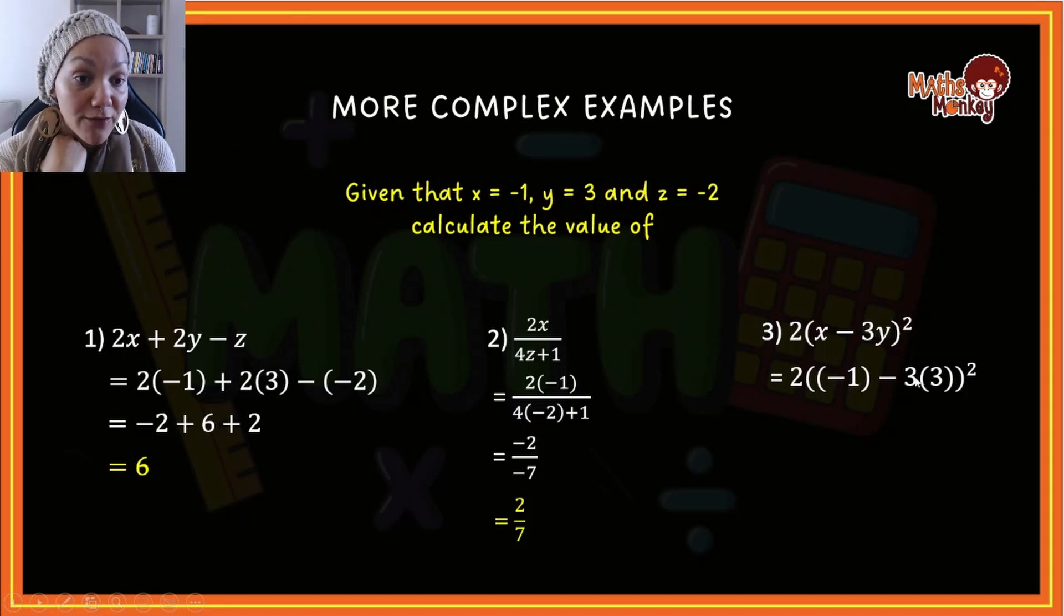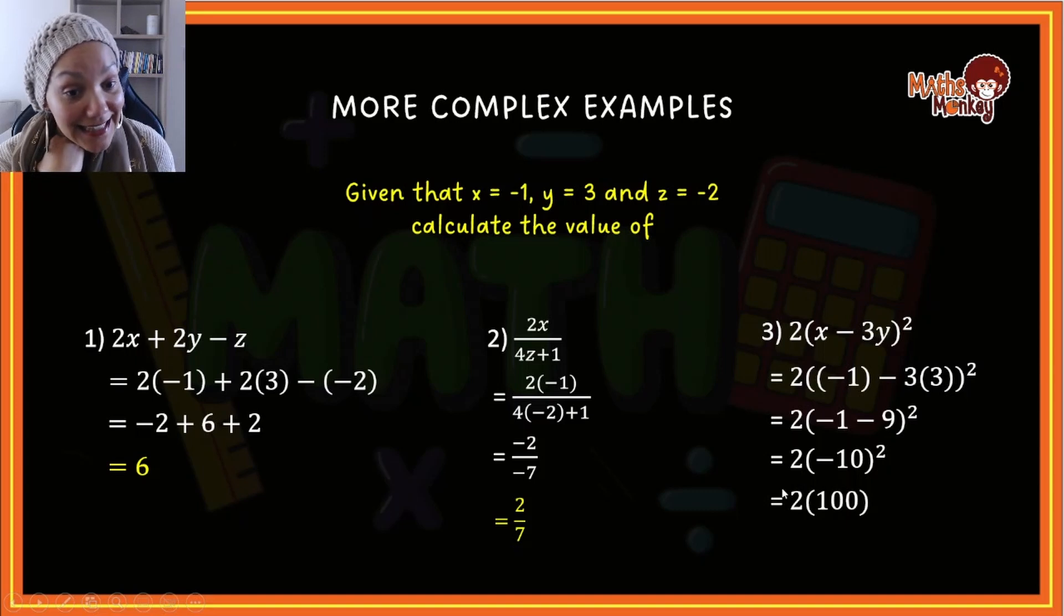So minus 1 minus negative 9 gives me negative 10. If you look here, the 2 stays the same, I'm simplifying what is in the bracket, and that gives me negative 10 squared. Now I square the bracket first, which gives me 100, and then I take that answer and multiply it by 2.